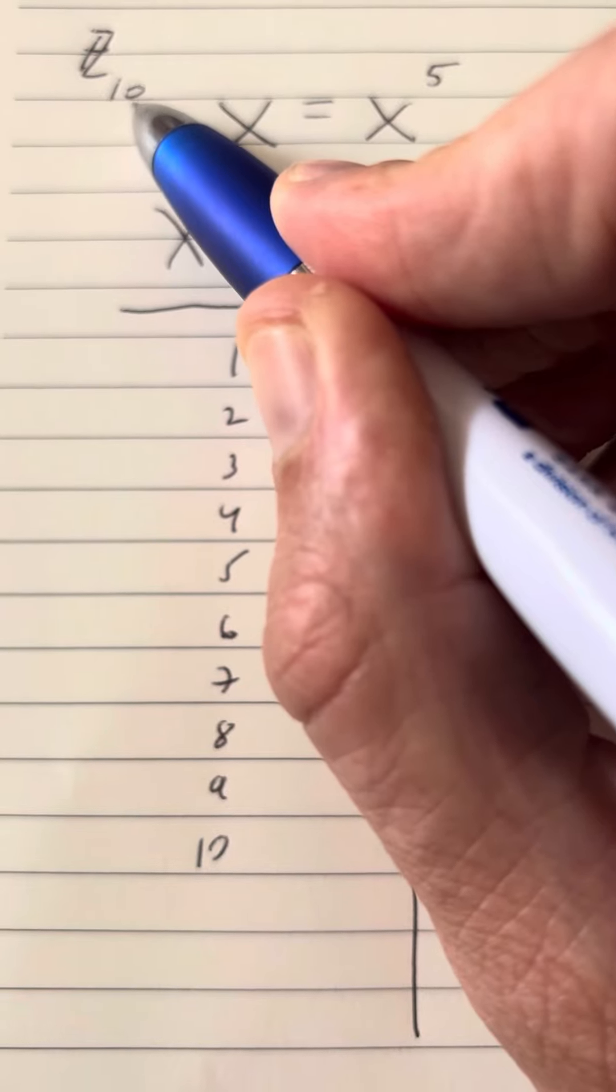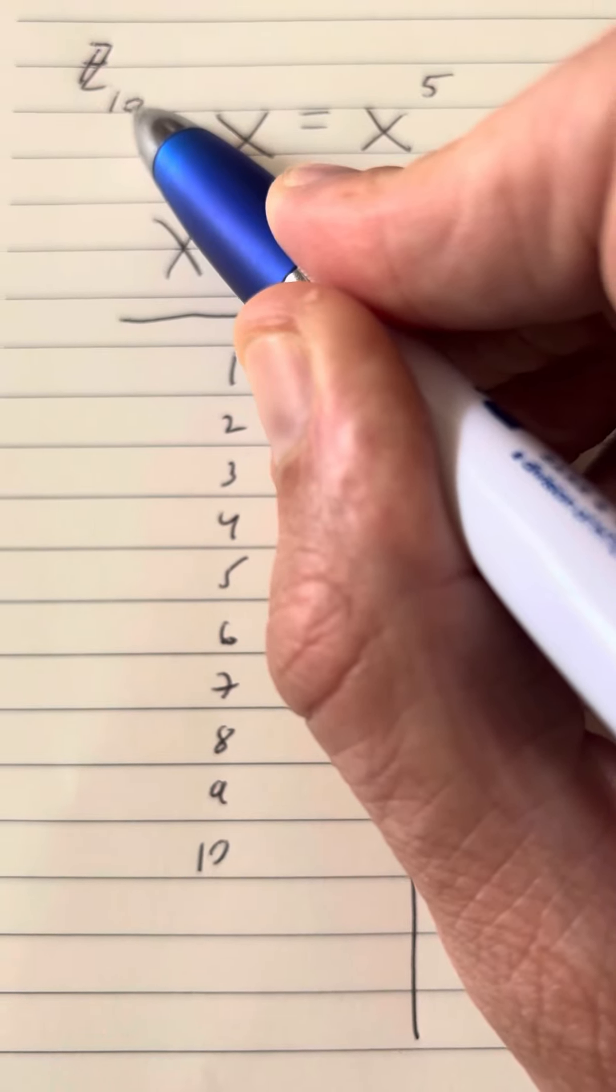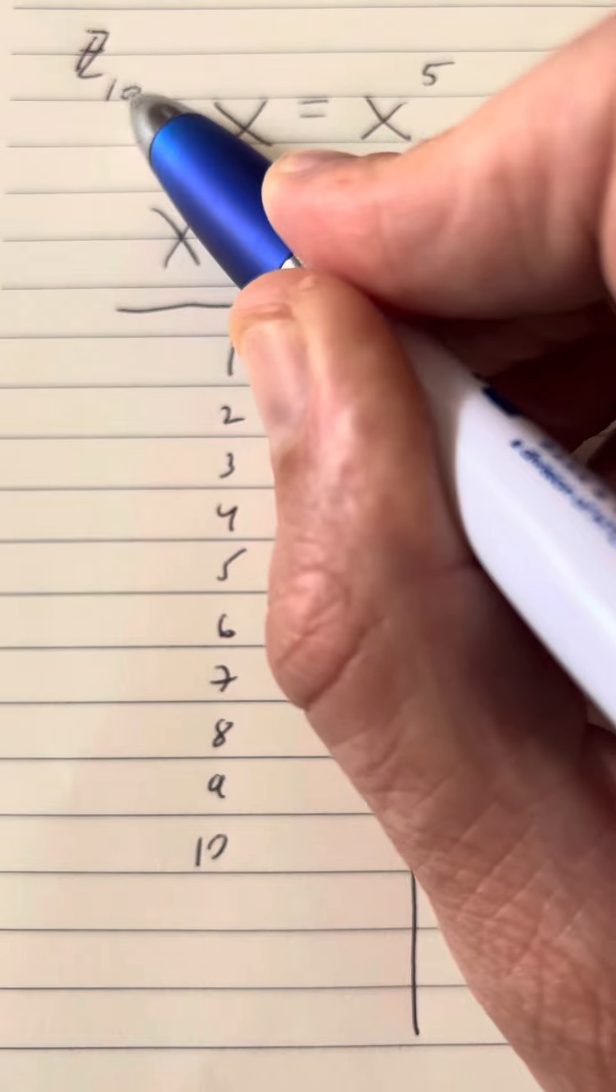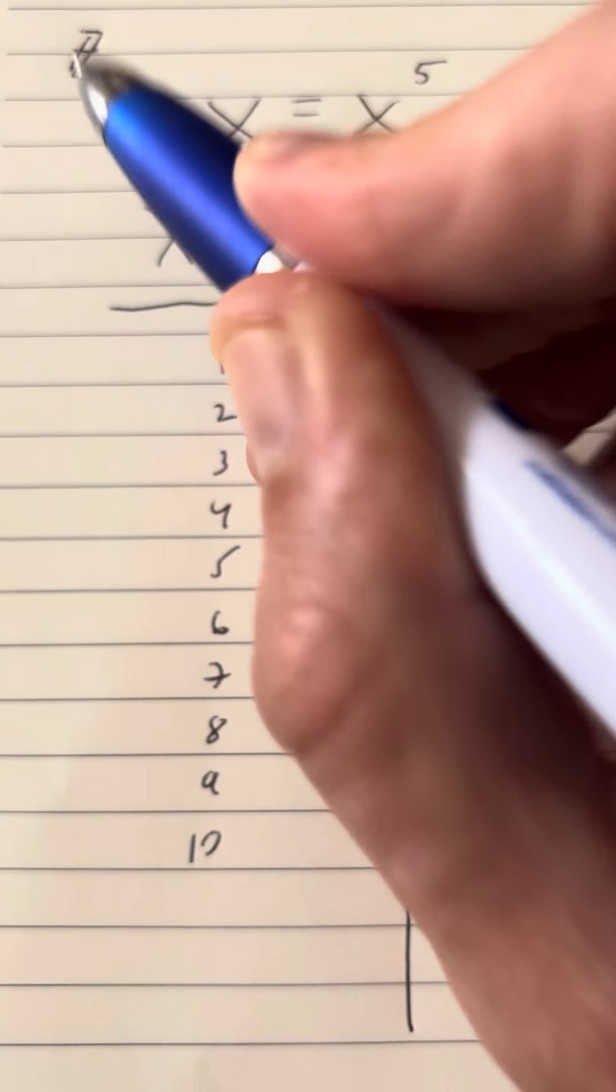And those are the remainders that you will get when you divide any whole number by 10. So that's how we find the number that corresponds.